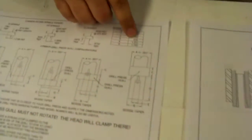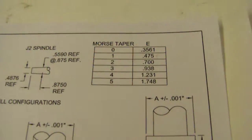If you look to our chart, you'll see that it's .938 as a Morse taper number 3. So you'll be able to use our charts to determine which Morse taper your machine is.